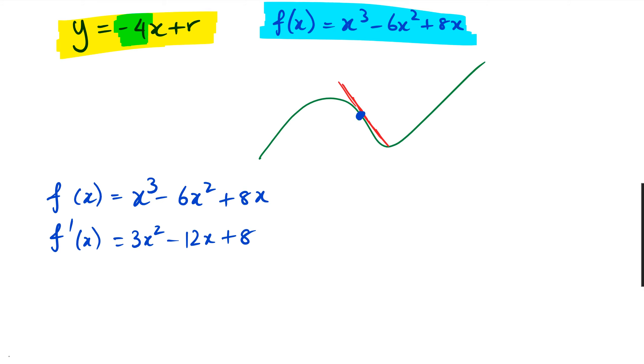So once I get the gradient function, I know that the gradient is negative 4 for the tangent. In other words, what I'm trying to figure out is when is f'(x) equal to negative 4? For what value of x is the gradient negative 4? So I'm going to substitute negative 4.